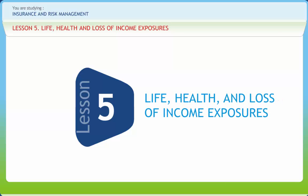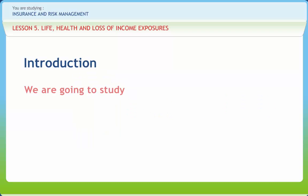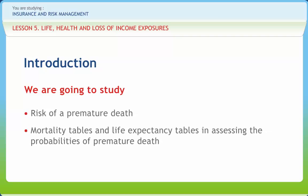Life, Health and Loss of Income Exposures. As we all know, our lives involve uncertainties and risk. Innovation and creativity sometimes involve greater levels of risk-taking and the potential of systematic breakdowns of economic systems. In this lesson, we will study the risk of a premature death, mortality tables and life expectancy tables in assessing the probabilities of premature death, and changing mortality rates over time.